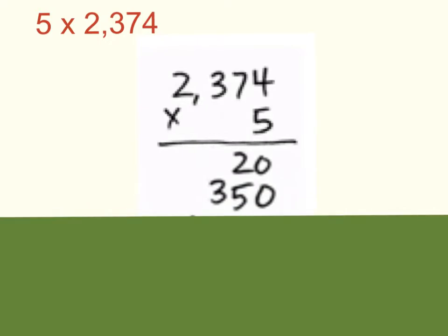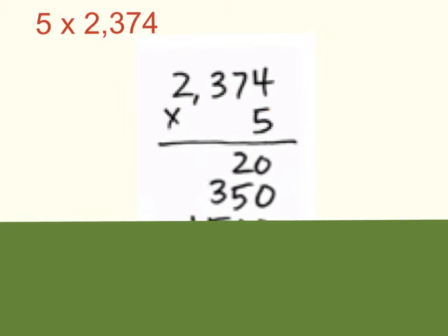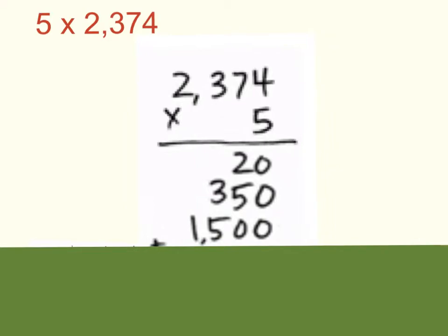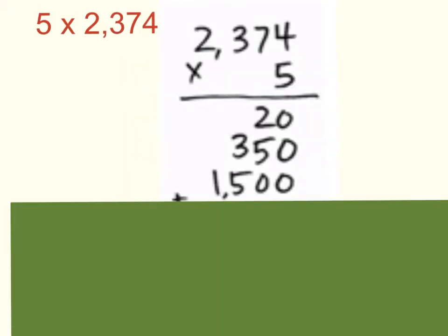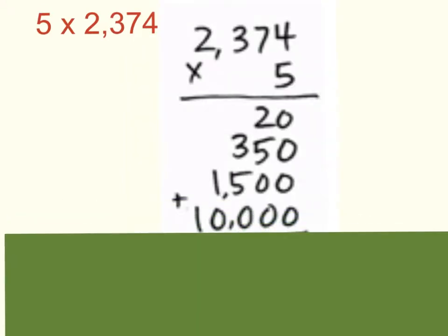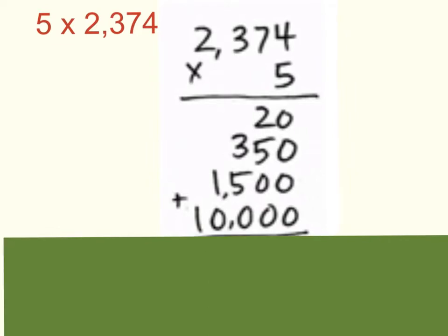Next we move to our hundreds place. 5 times 3 hundreds will give me a product of 1,500. And finally we move to our thousands place — 5 times 2,000 will give me a product of 10,000. Now that we have our four partial products, I need to add those together in order to get my full product.